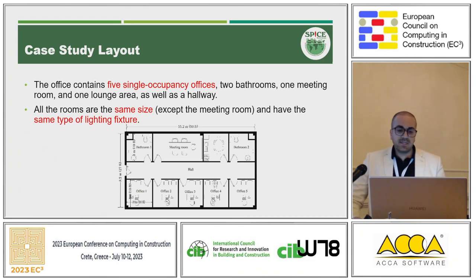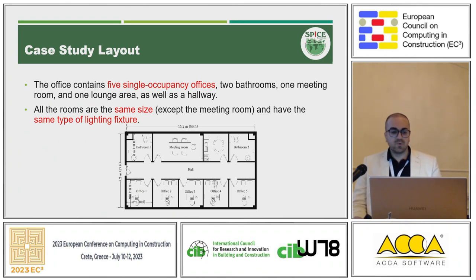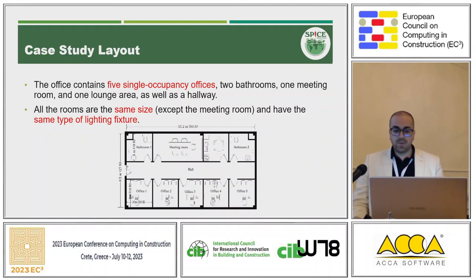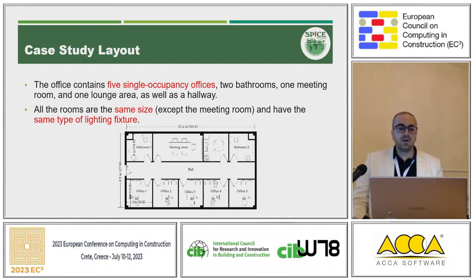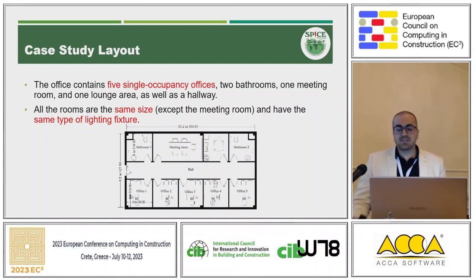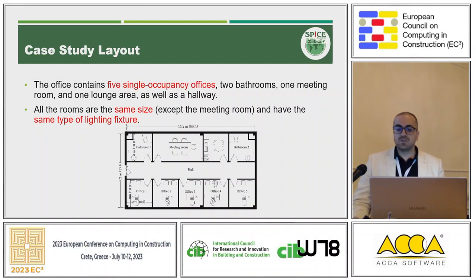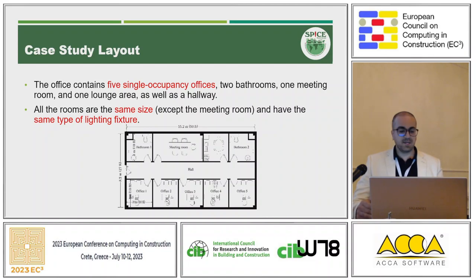This is an example case — a simple office layout used for simulation. It has five single-occupancy offices, two bathrooms, one meeting room, and one lunch area. It's a very small, very typical office. Of course, it has some limitations: there are no windows and only small hallways.